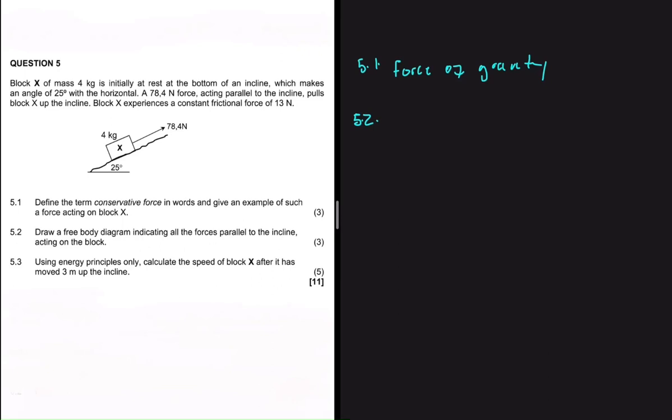We have block X of mass 4 kg which is initially at rest at the bottom of an incline which makes an angle of 25 degrees with the horizontal. A 78.4 newtons force acting parallel to the incline pulls the block X up the incline. Block X experiences a constant frictional force of 13 newtons.